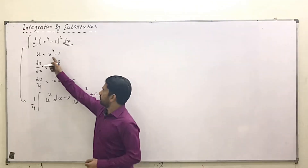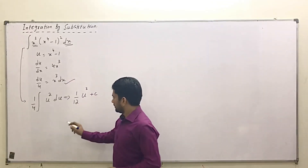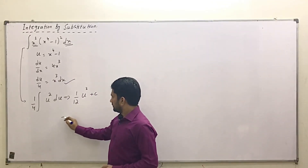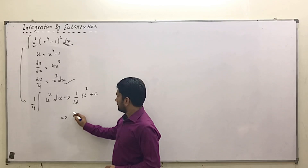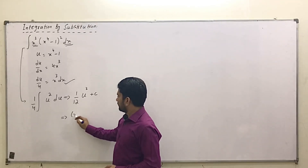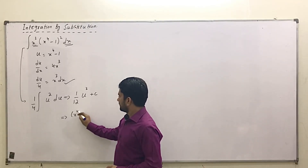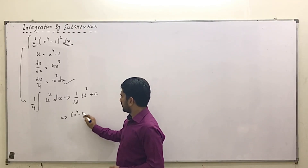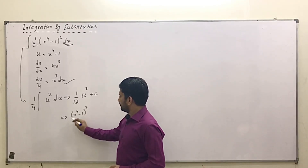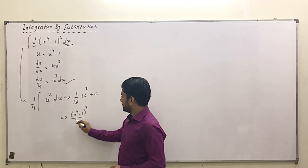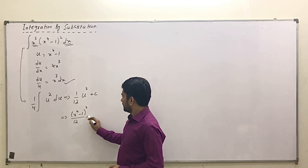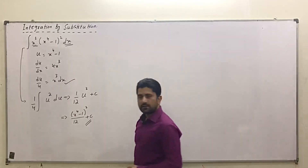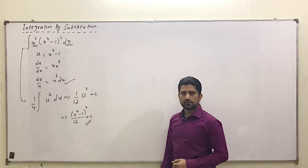So we get 1/12 · u³ plus a constant. Now substitute the value of u, which is x⁴ - 1. So the final answer is (x⁴ - 1)³ / 12 plus a constant, and this is our solution.